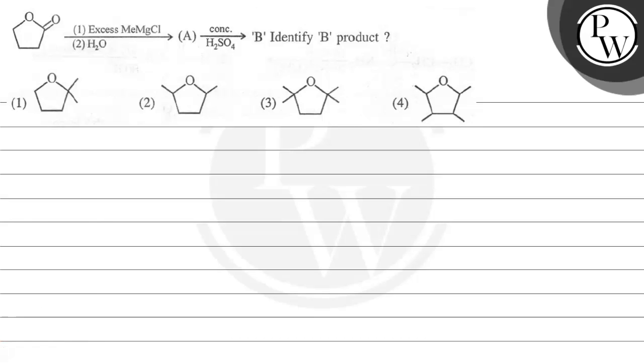Hello, let's read this question. Here we are adding excess of methyl magnesium chloride, and in the second step we are adding water to get A. Then to A we are adding concentrated H2SO4 to get B, so identify B product.